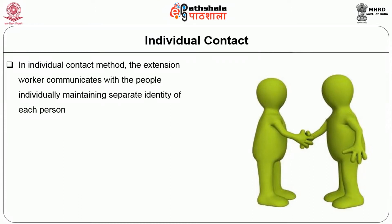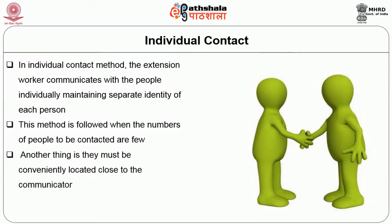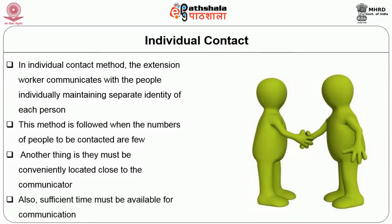In the individual contact method, the extension worker communicates with people individually, maintaining the separate identity of each person. This method is followed when the number of people to be contacted is few, they must be conveniently located close to the communicator, and sufficient time must be available. Examples include farm and home visit, farmers call, telephone call, personal letters, and observation plots or adaptive mini kit trials.